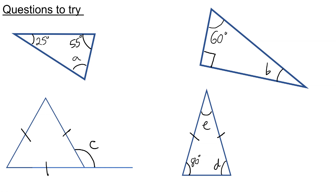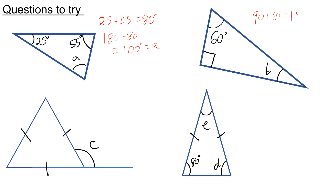Here are some questions for you to try — find the missing angles indicated by letters. When you're ready for the answers, press play. To work out A, I do 25 plus 55, which is 80 degrees, then 180 take away 80, which gives 100 degrees. For the one on the right, 90 plus 60 is 150; subtract from 180 and we get 30 degrees for B.